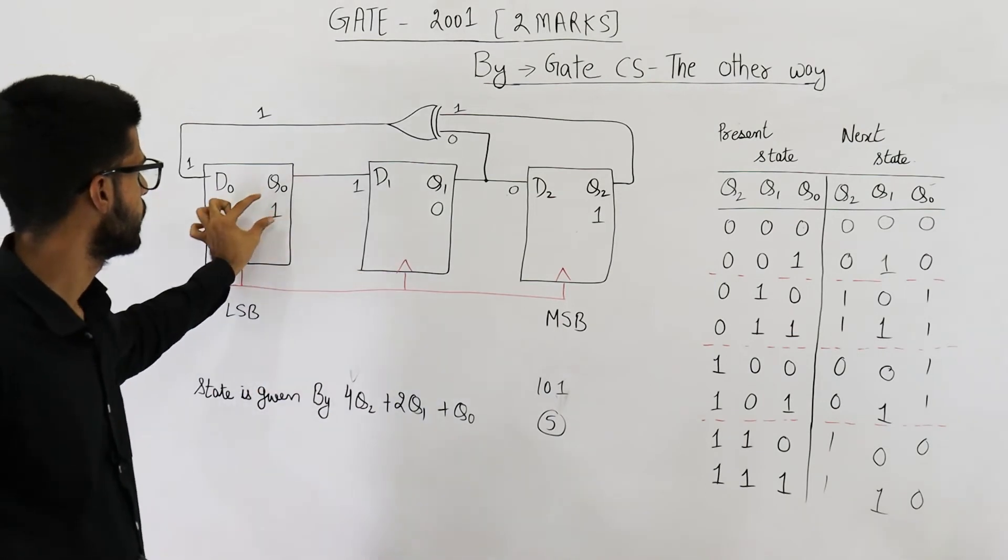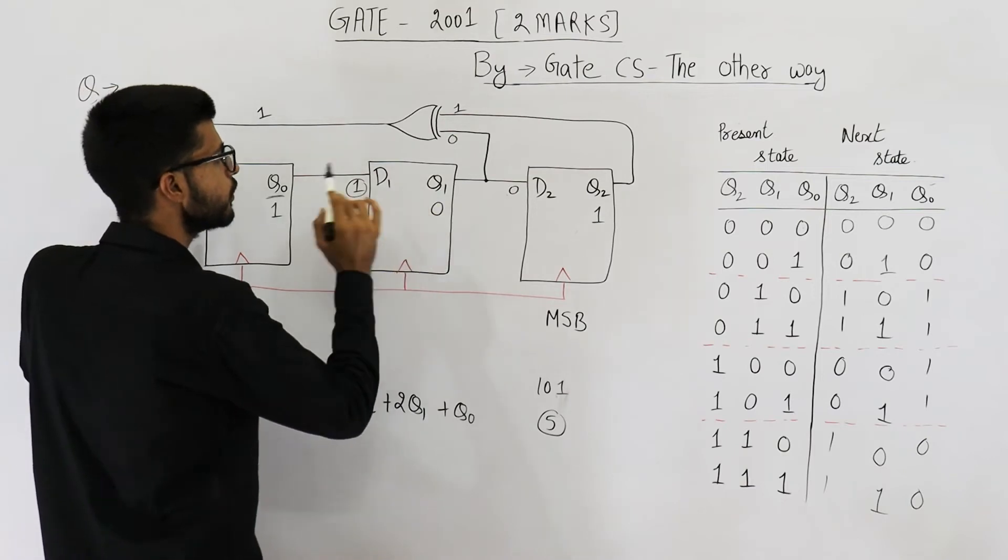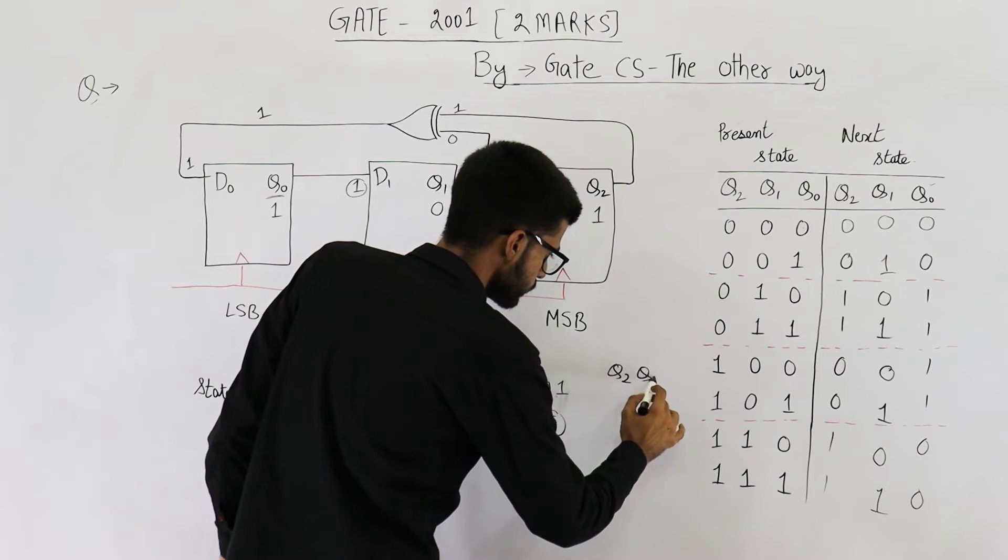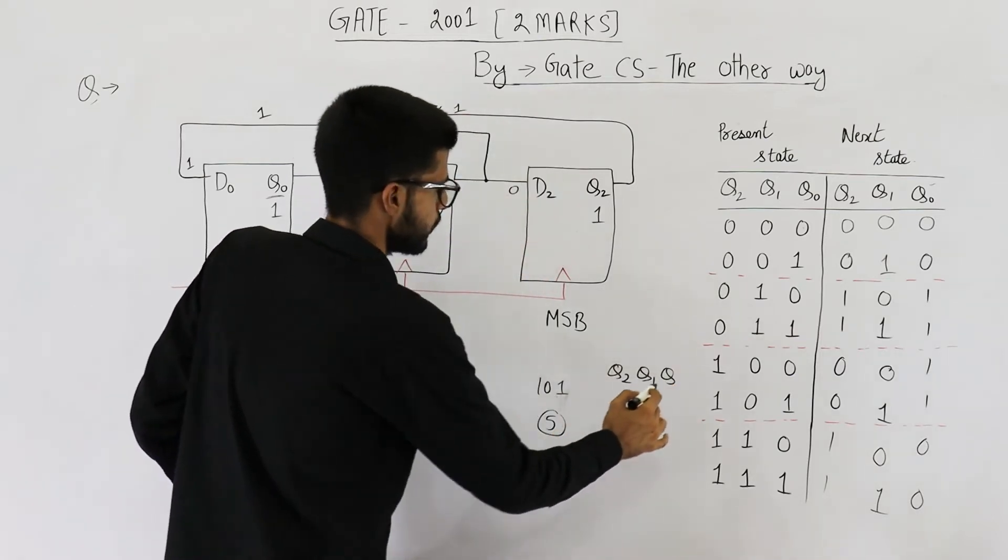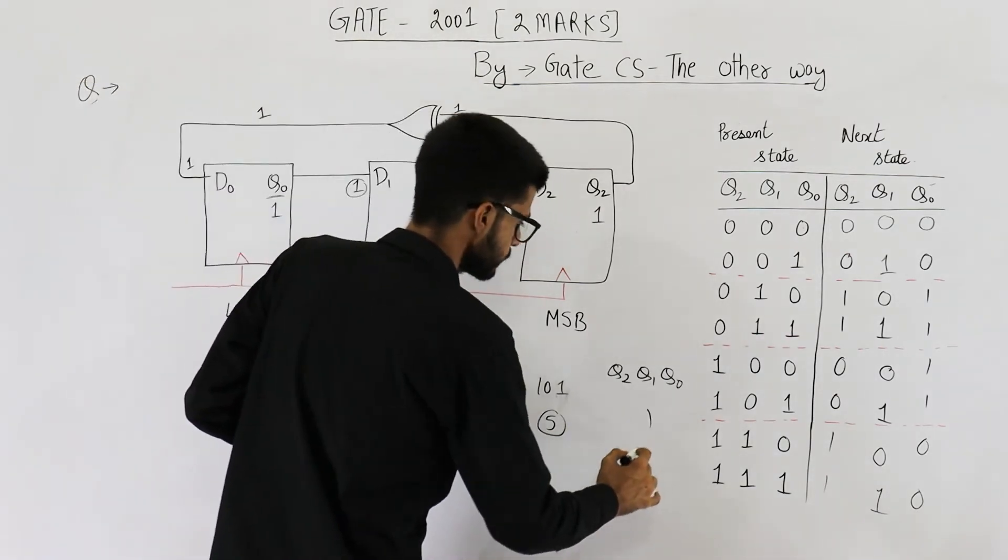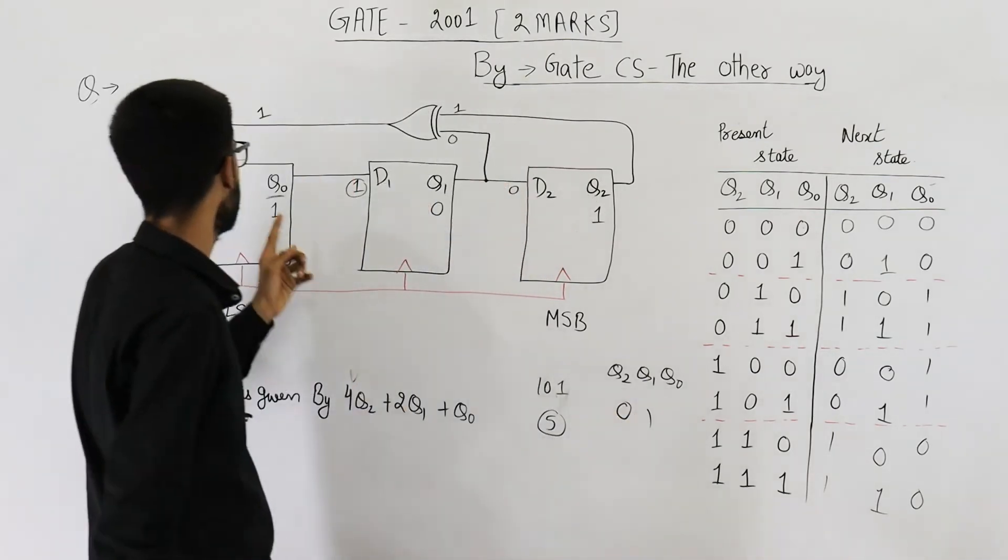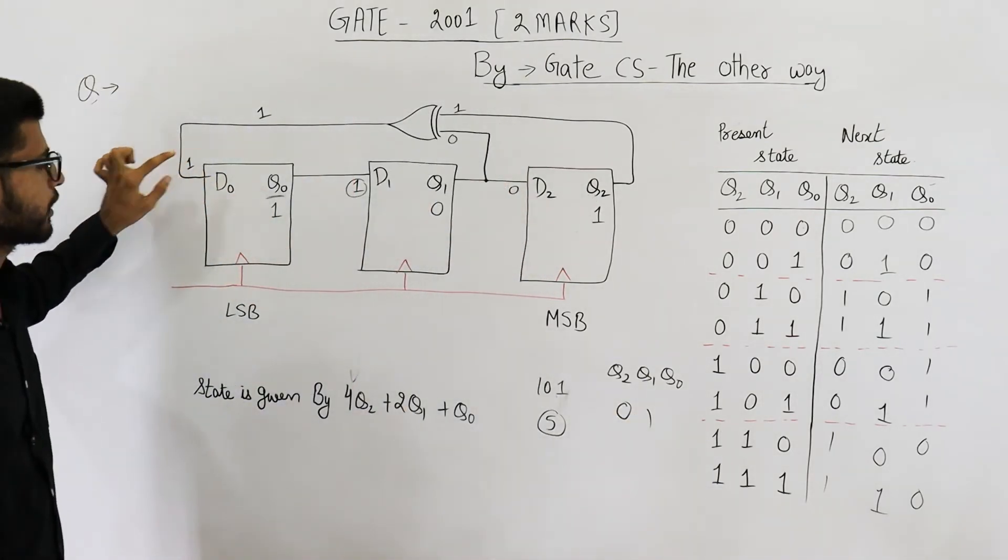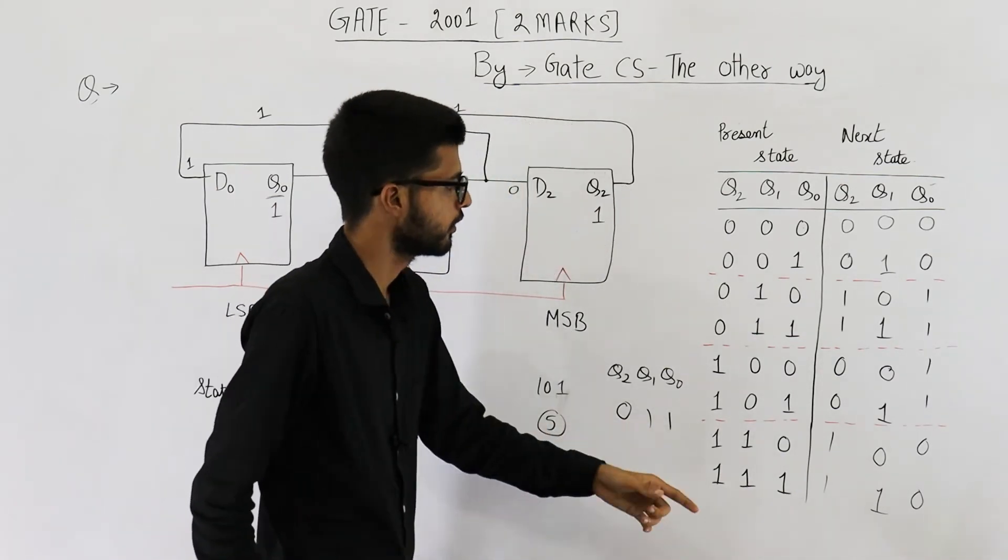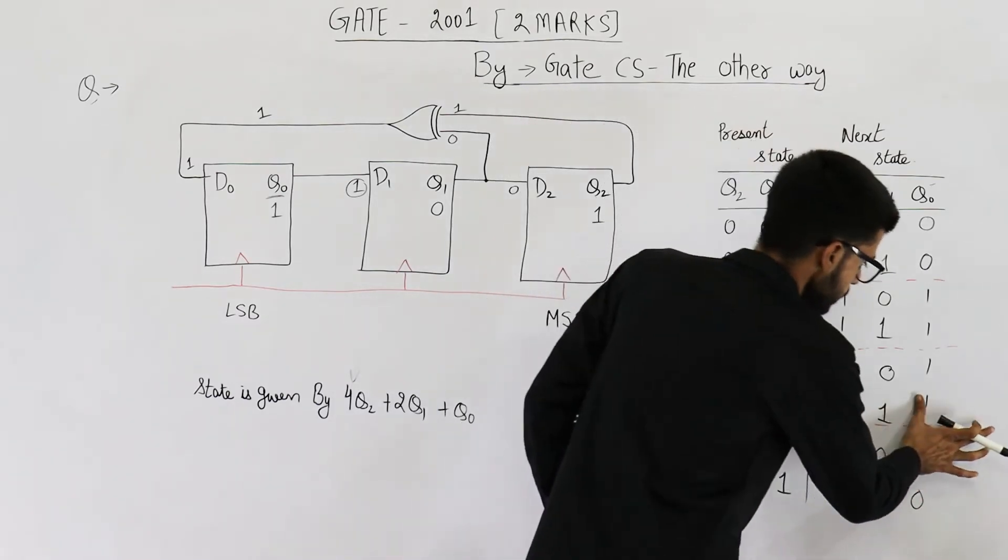So whenever a clock signal is given, this bit, that means the value of q0 which is 1, will be given as the value of q1. So q1 will become 1, q2 will become 0, and q0 will become 1. So after 5, the next state is 3. From here also you can verify: 1, 0, 1 goes to 0, 1, 1. This is a 1.